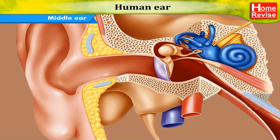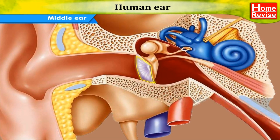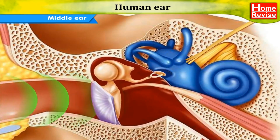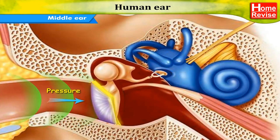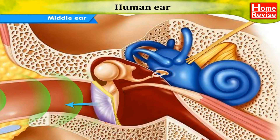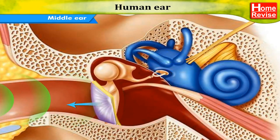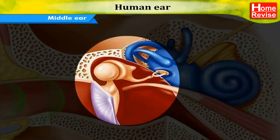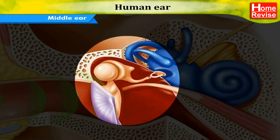There is a thin membrane in the cavity of the middle ear called the eardrum. When a compression in a sound wave reaches the eardrum, the pressure outside it increases and it gets pushed inwards. The opposite happens when a rarefaction reaches there — the pressure outside decreases and the membrane gets pulled outwards. Thus, sound waves cause vibrations of the membrane.